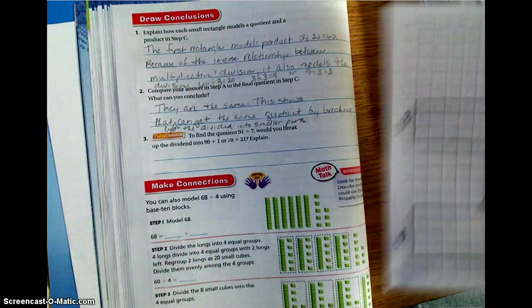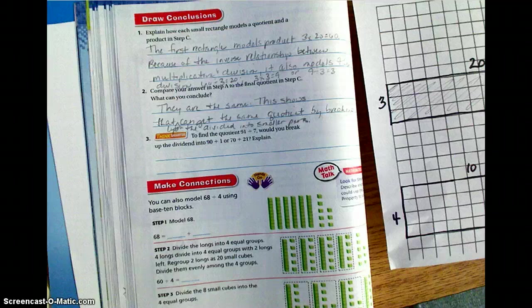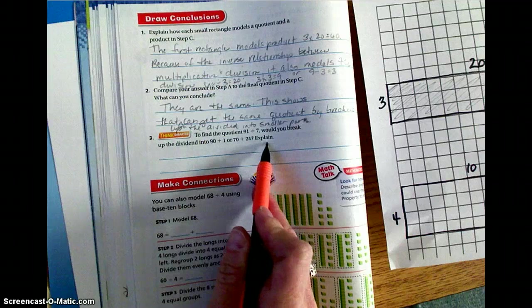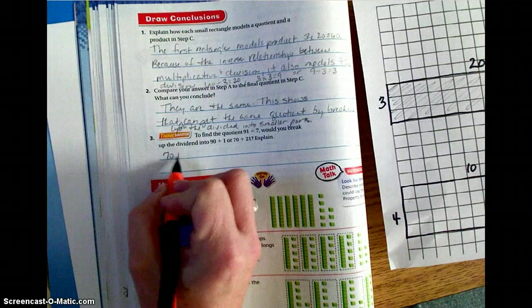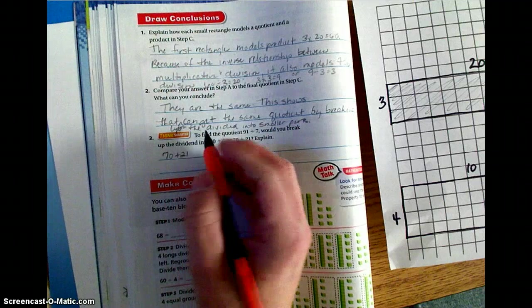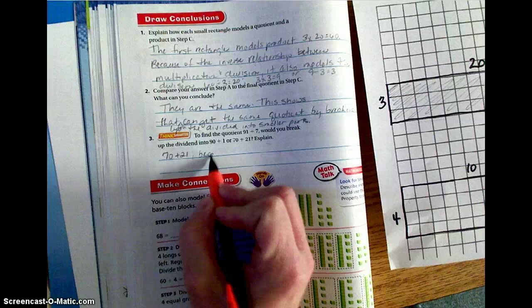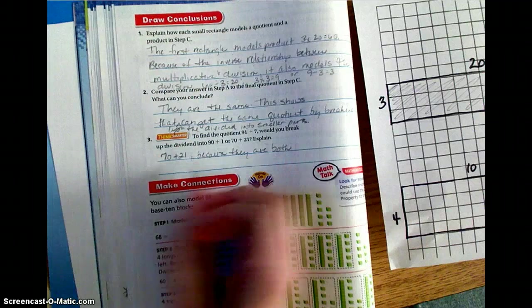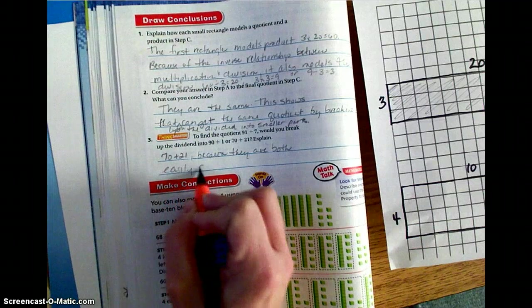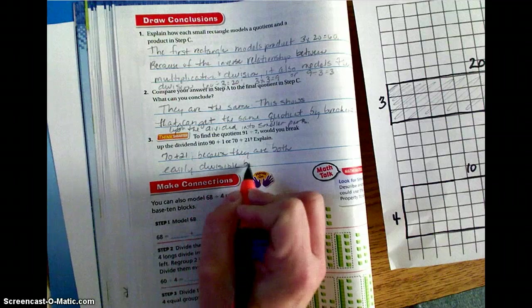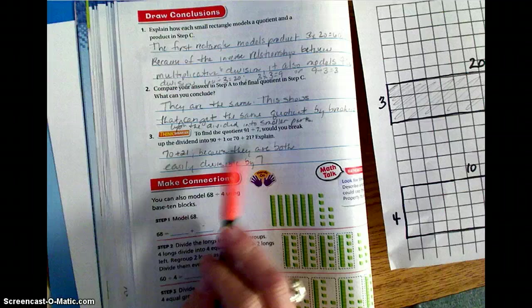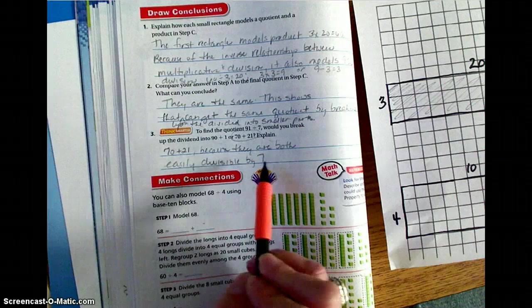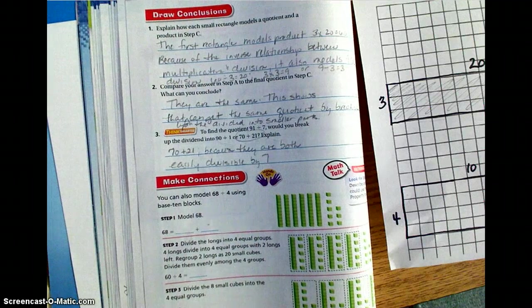Thinking smarter. To find the quotient 91 divided by 7, would you break up the dividend into 90 plus 1, or 70 plus 21, explain. The correct answer is going to be 70 plus 21, because these are both numbers that are easily divisible by 7. Because they are both easily divisible by 7. 7 isn't going to go into 90 and 1 evenly. So we want to look at 70 and 21, because 7 will go into 70 10 times, 7 will go into 21 3 times.